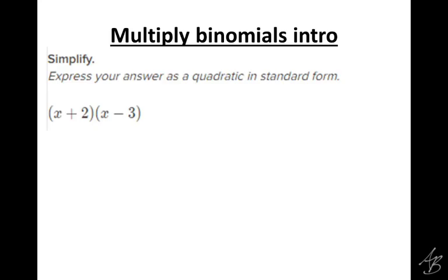What we want to do here is multiply x plus 2 times x minus 3. The way we've been doing it is by using an area model and saying that x plus 2 here in the rectangle is going to be the height, and x minus 3 is going to be the width. So to solve a problem like this, to multiply this out, I'm going to make an area model.